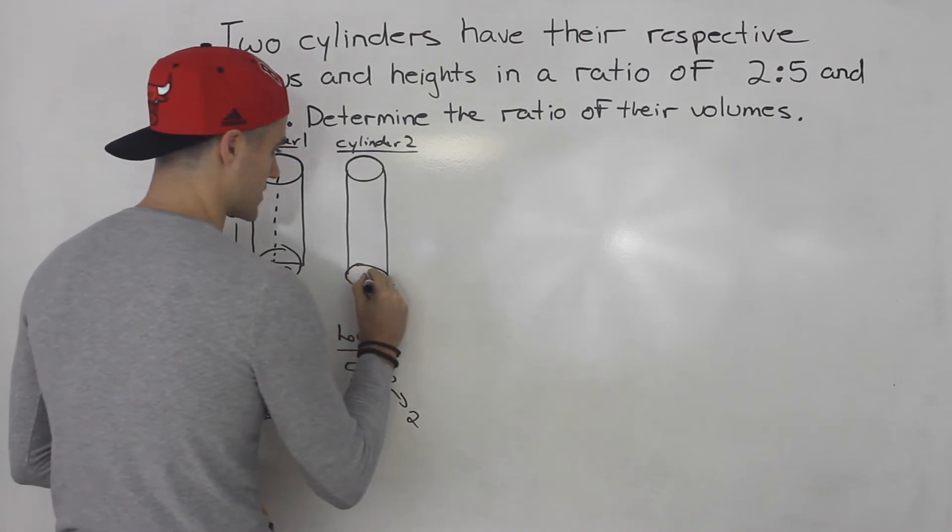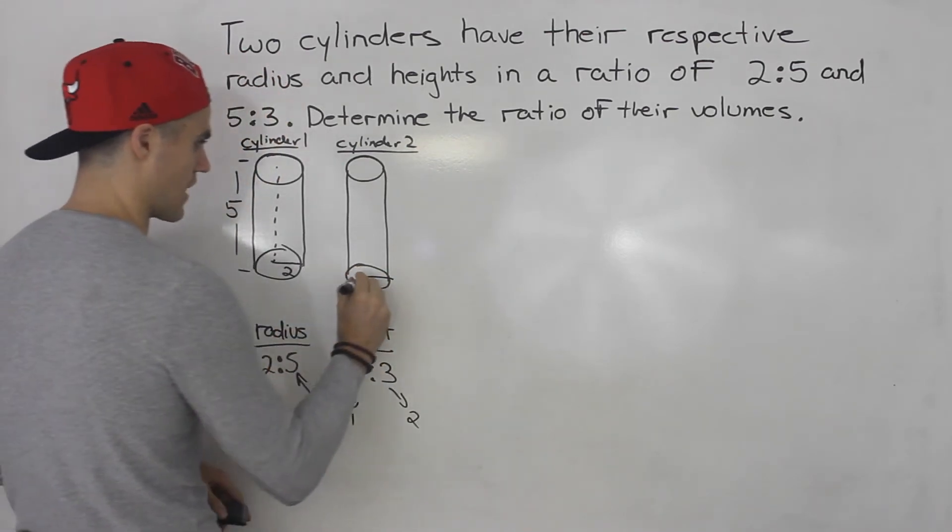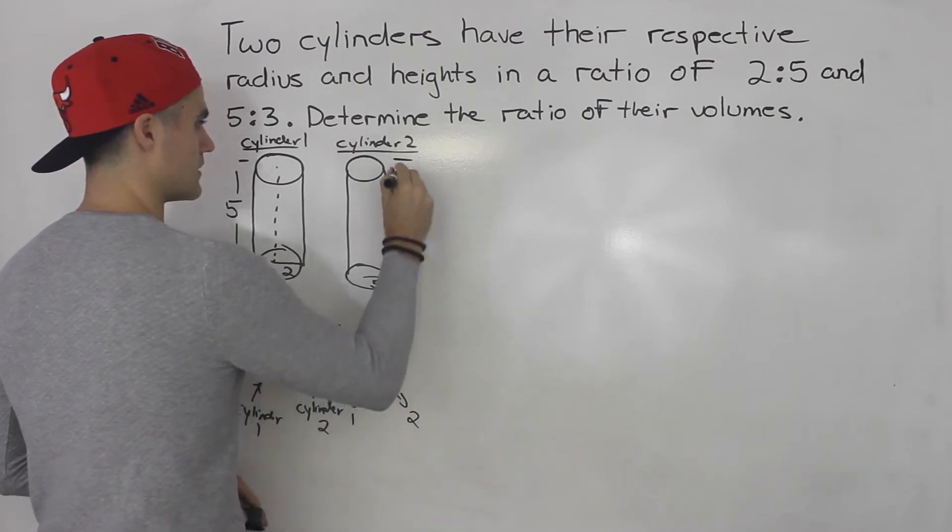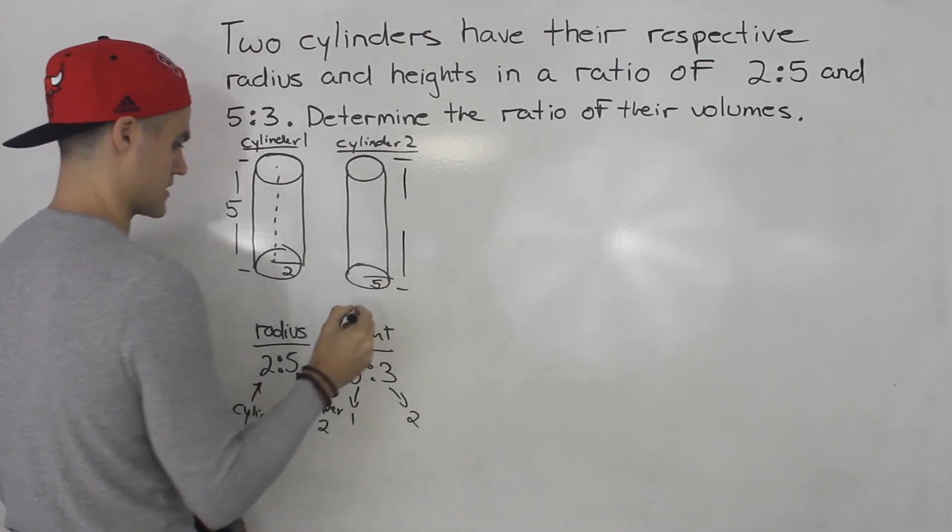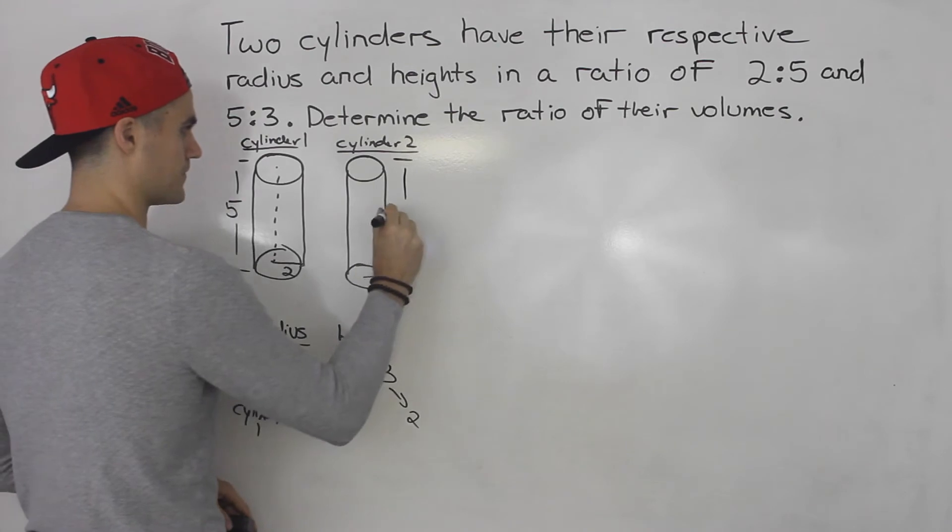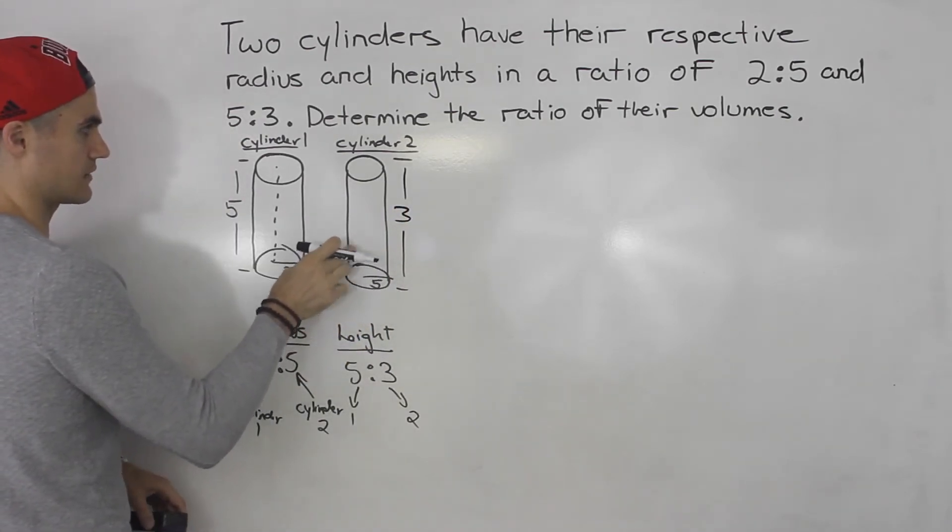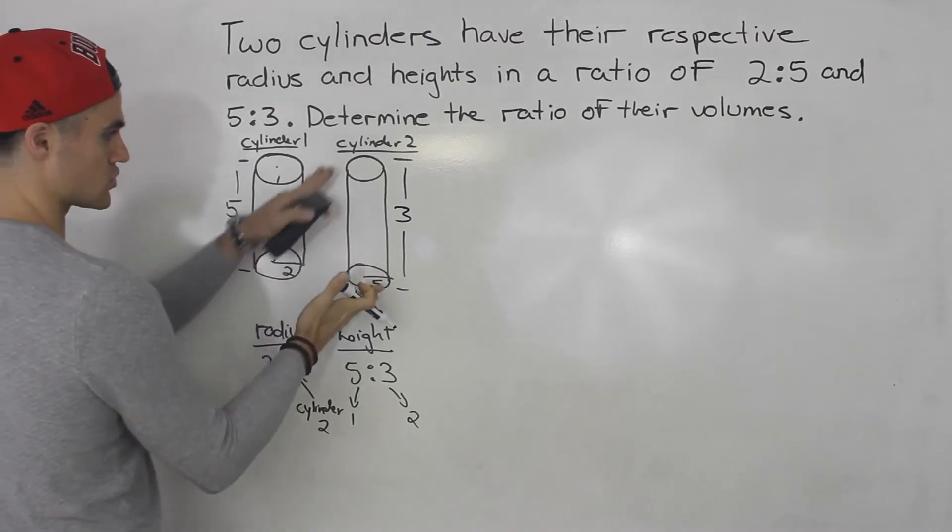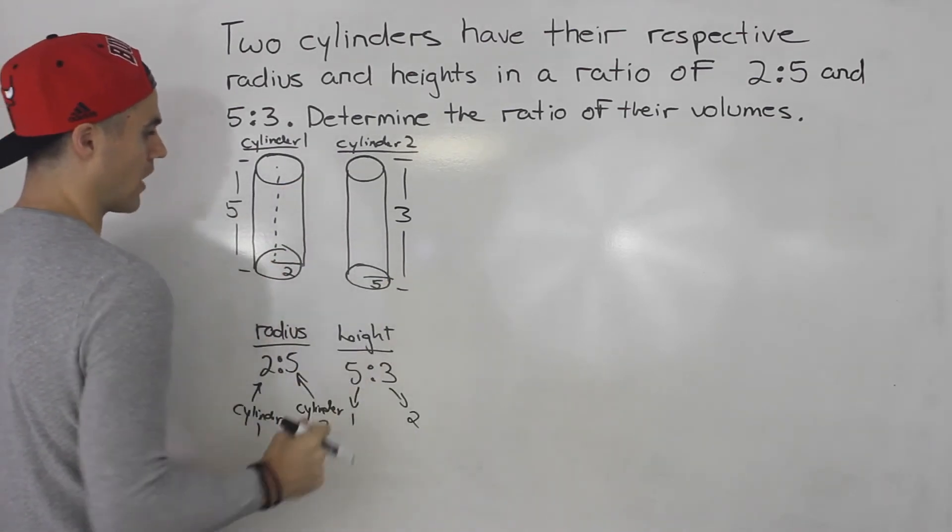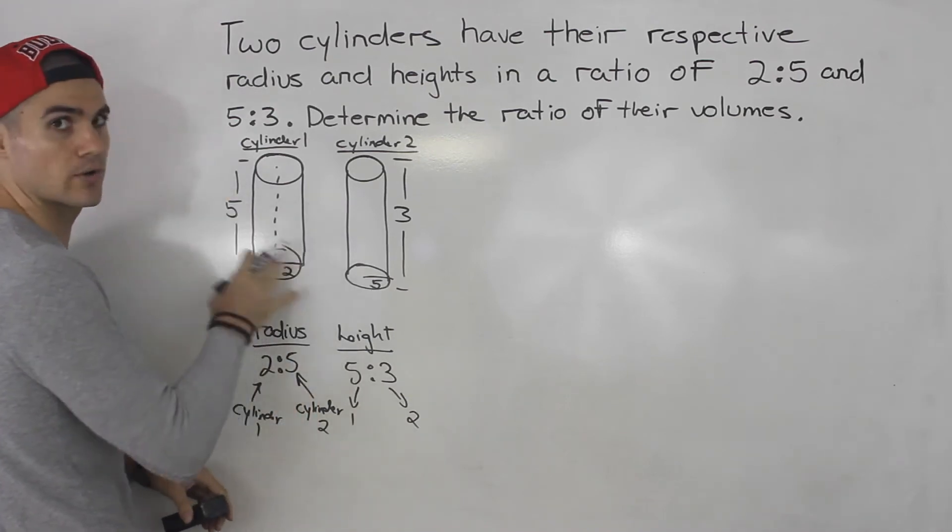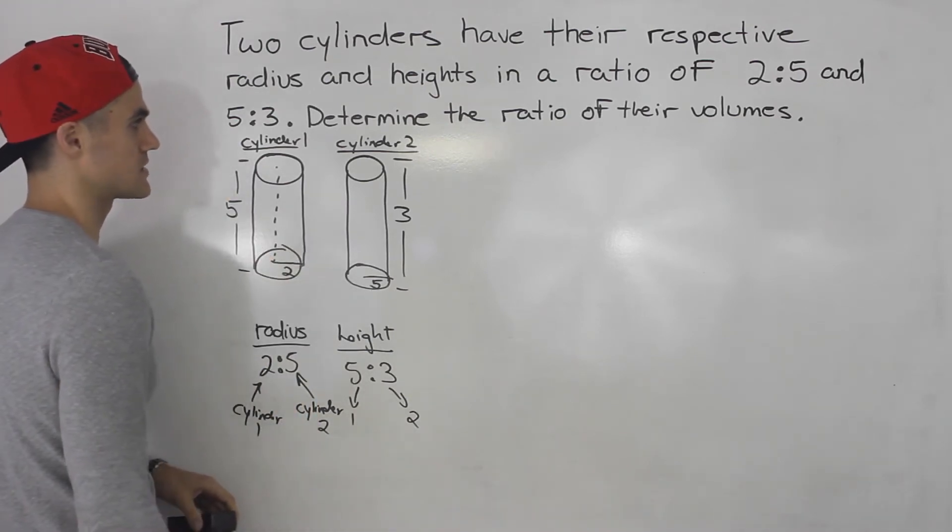And then for cylinder 2 the radius is 5 and then the height is given as 3. So like I said this is not to scale because technically this cylinder should be shorter and wider. But anyway I'm just showing this visually in a diagram so you could see it better.